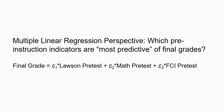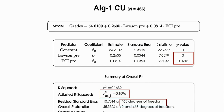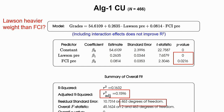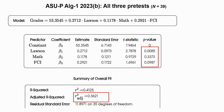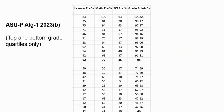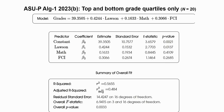Despite my caveats about regression analysis, here are a couple of models. For the large course, the Lawson appears to carry heavier weight than FCI, though R-squared is not very high. If you cut out the middle and look only at the top and bottom quartile grades, R-squared rises to about 0.27. For a class where all three predictors — Lawson, Math, and FCI — are used, R-squared reaches 0.36, though the sample is fewer than 40 students. Looking only at top and bottom quartile grades, R-squared goes up to 0.48.